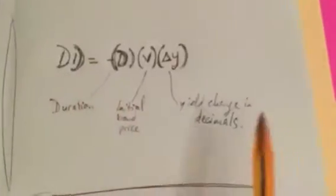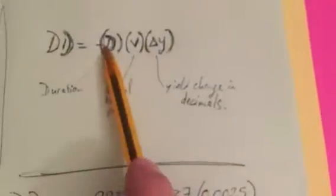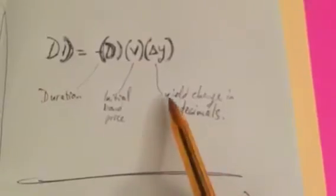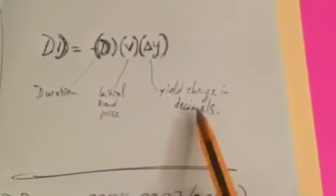So the formula for dollar duration: we take the bond duration as an input, multiply it by the initial bond price, and multiply that by the yield change in decimals, which is going to be 25 basis points.